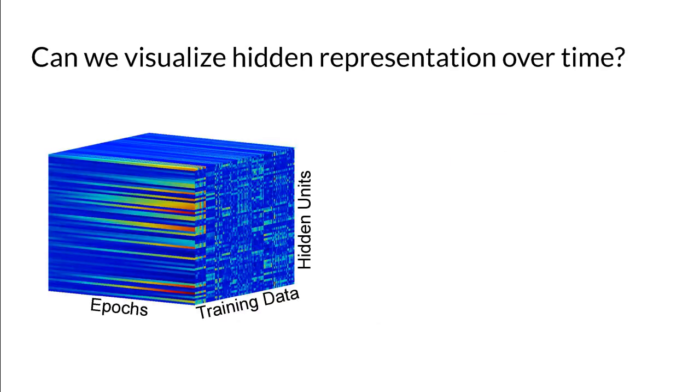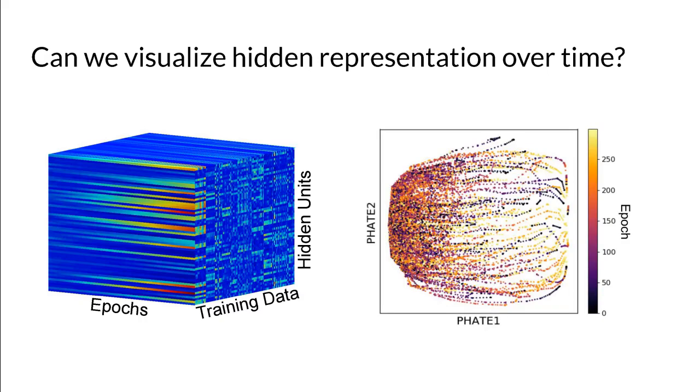Now, to MFATE. When training a neural network, we observe a tensor of activations of each hidden unit by each training sample at each epoch. If you were to flatten this tensor into a matrix and visualize it naively, there's no discernibly useful structure.